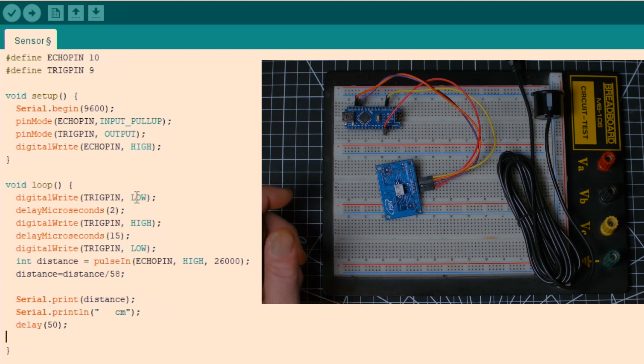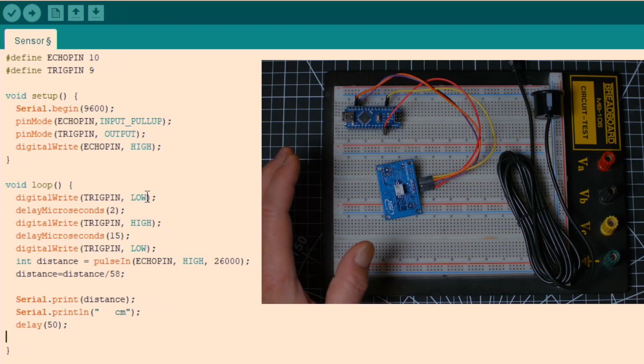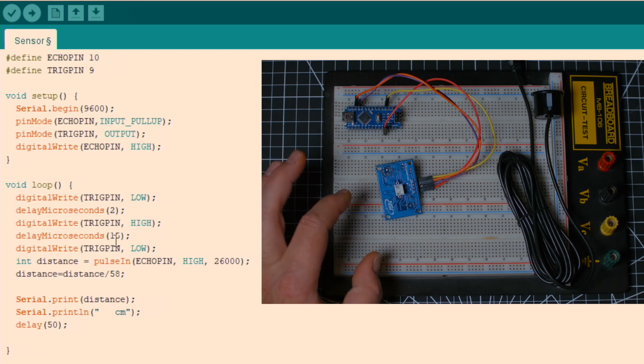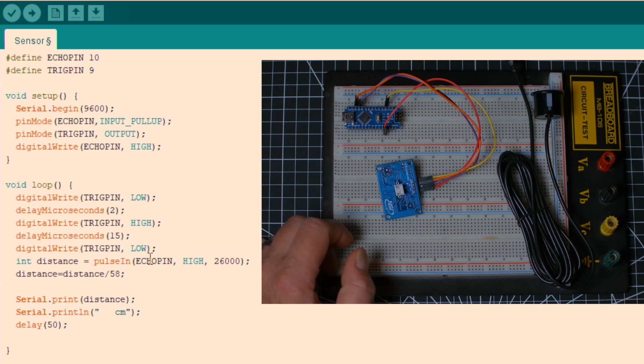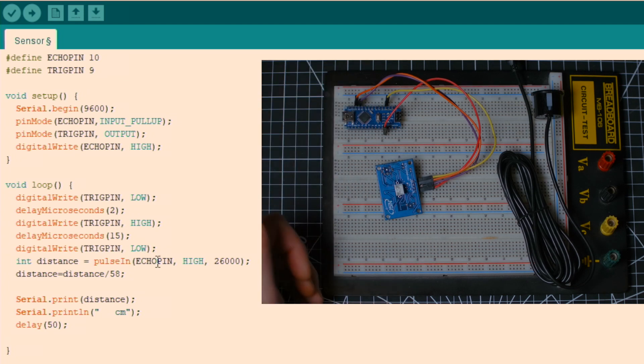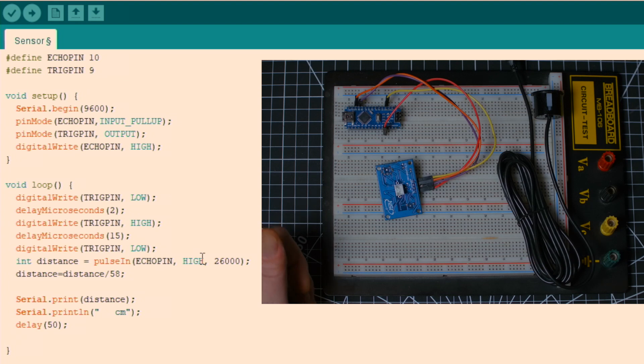Then we get to the main loop. So digital write of the trigger pin to low to turn it off. Then we wait 2 microseconds. And then we write to the trigger pin high to send the ping out for 15 microseconds and turn it off again. And then we have this formula here: distance is equal to pulse in of the echo pin, so the echo pin will receive the ping back and we set it to high.